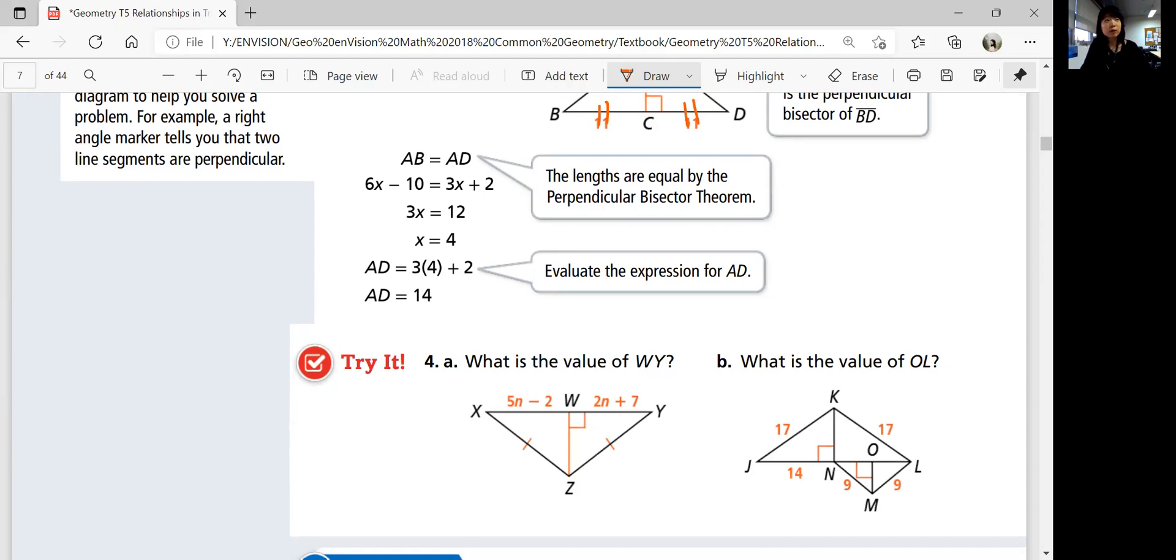Now that you know algebra, it should be fairly easy because these two sides are equal. Z is equidistant from X and Y, and ZW is a perpendicular bisector by perpendicular bisector theorem. And so 5N minus 2 should be equal to 2N plus 7. And then you can figure out N by subtracting 2N on both sides, adding 2 on both sides, dividing 3 on both sides, N is 3. So what is the value of WY? 2N plus 7 is WY, right? So 2 times 3 plus 7 would be your answer, 6 plus 7, which is 13.